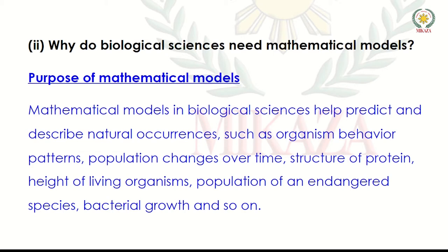How much does the population change in any country? How many people have a certain protein structure? These are considerations for endangered species. Population growth — where their lives are safer — and bacterial growth, so that medicines and drugs can be prepared. We observe all these things and input them into mathematical models in data form or graph form, using mathematical formulas to show exponential growth.